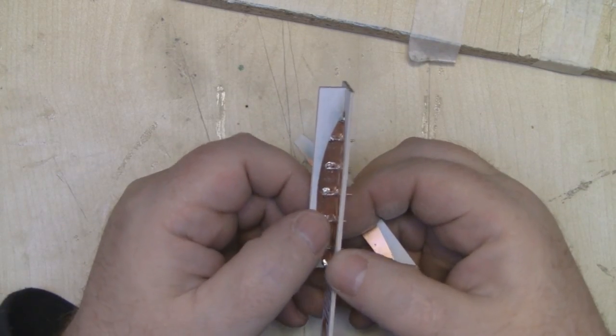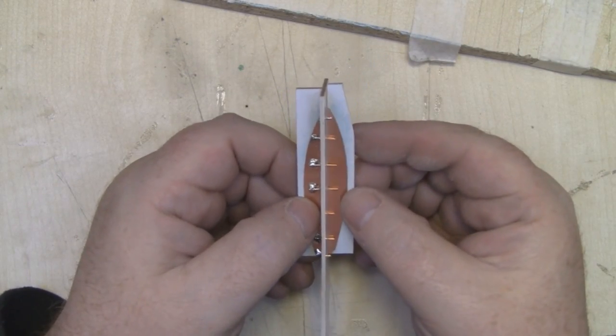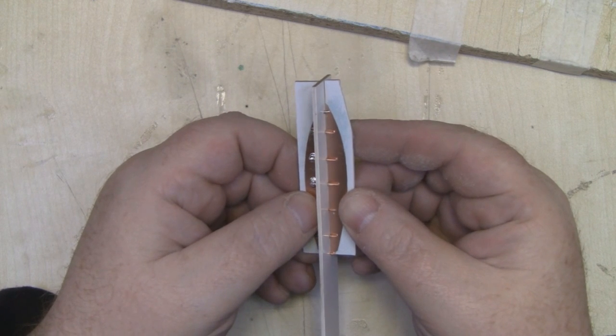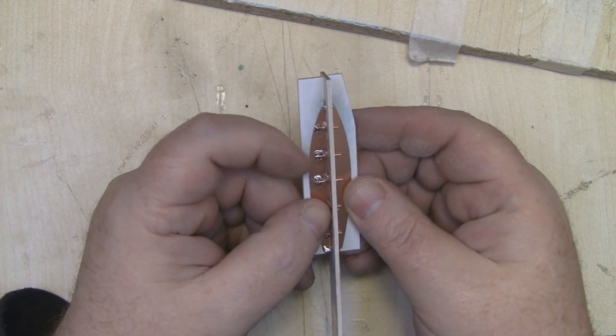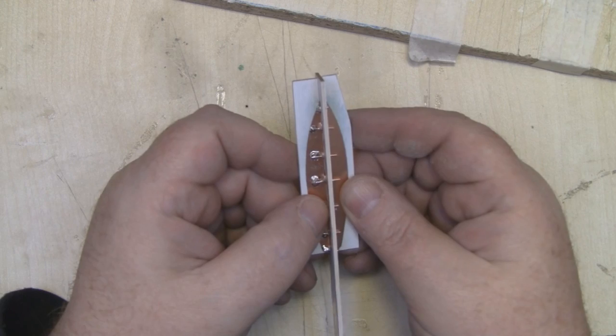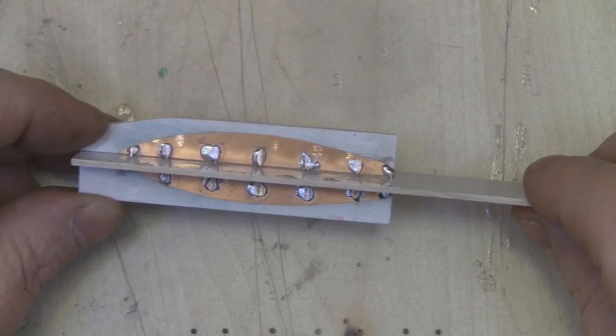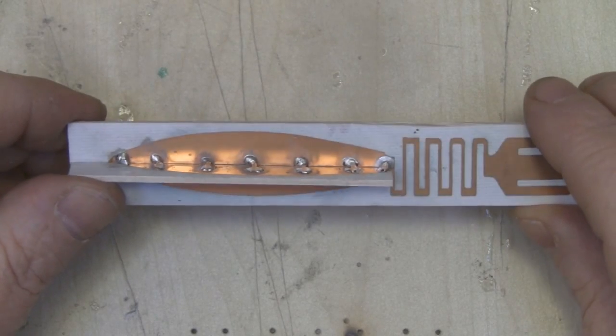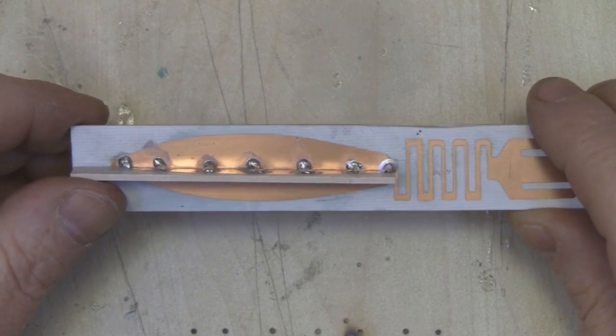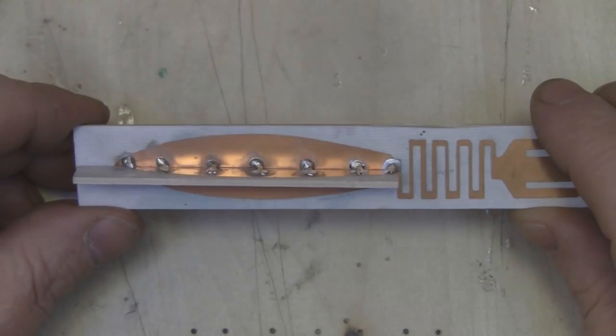So the first half is soldered in there, so I'm just going to do the same with the second half on the opposite side, and then I'll get in there with the sanding drum on the dremel and try and tidy it all up a little bit. So I've got both wings attached to the main driven element now, so hopefully that'll do the job and it'll work much better.